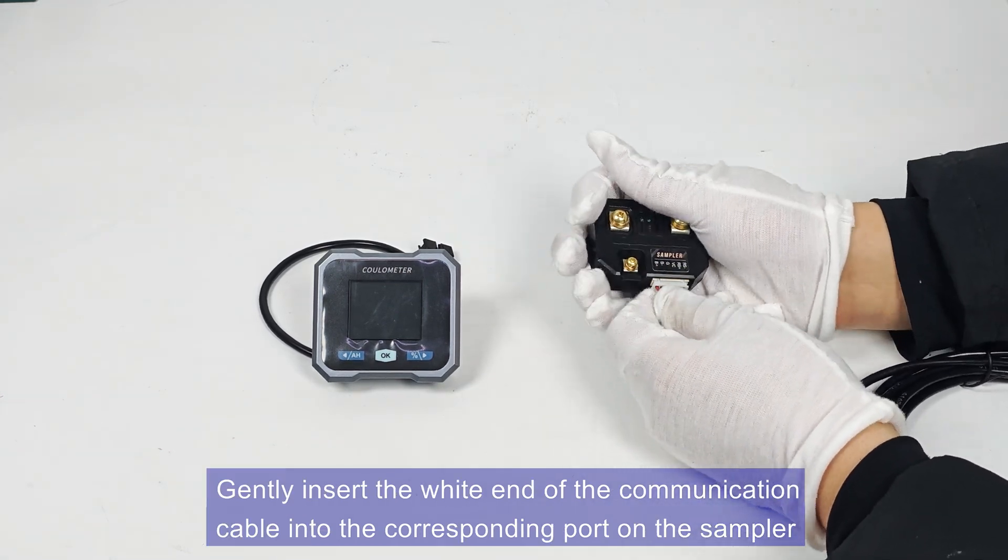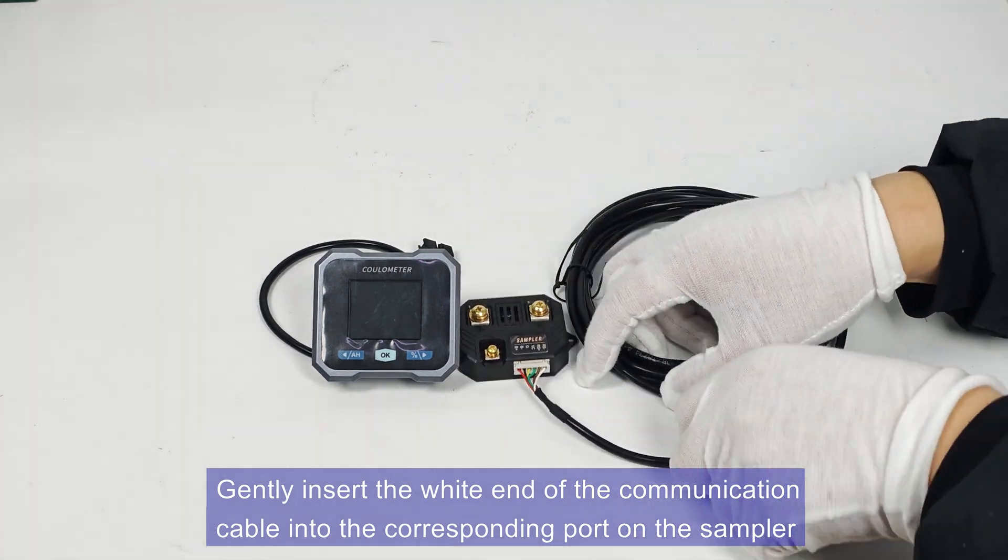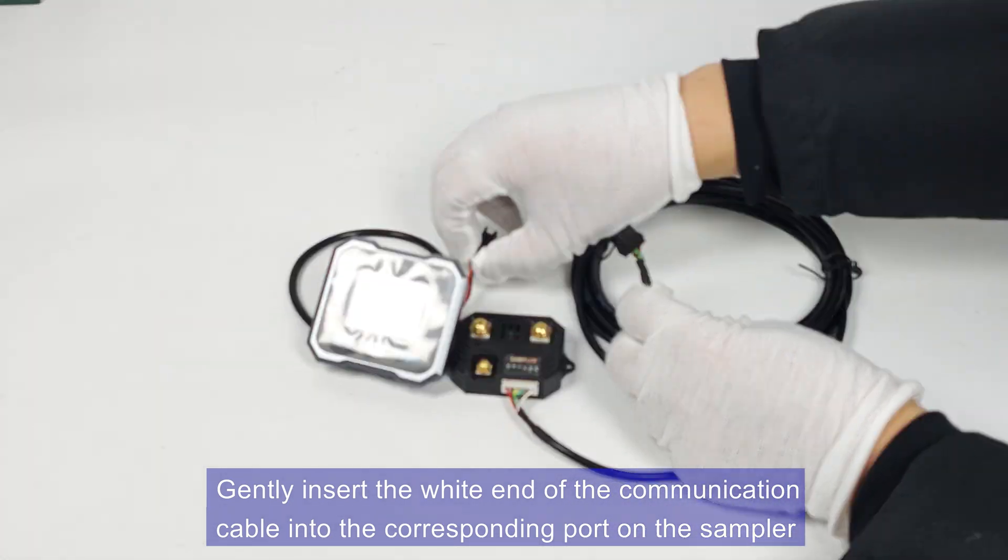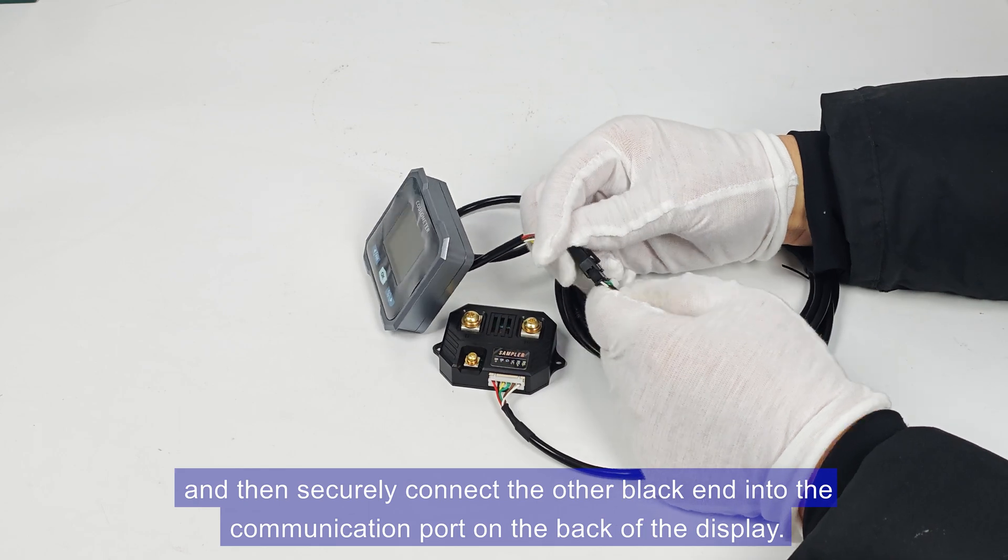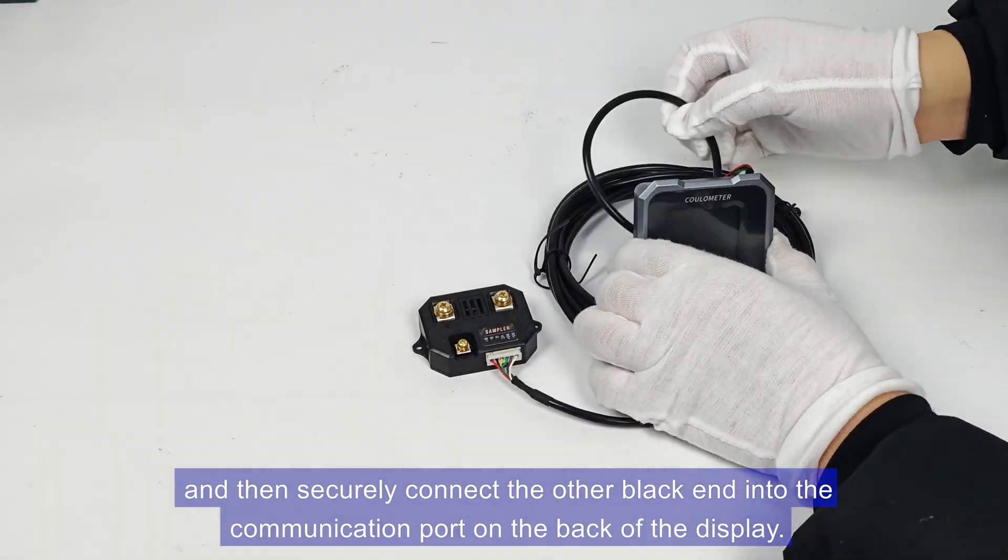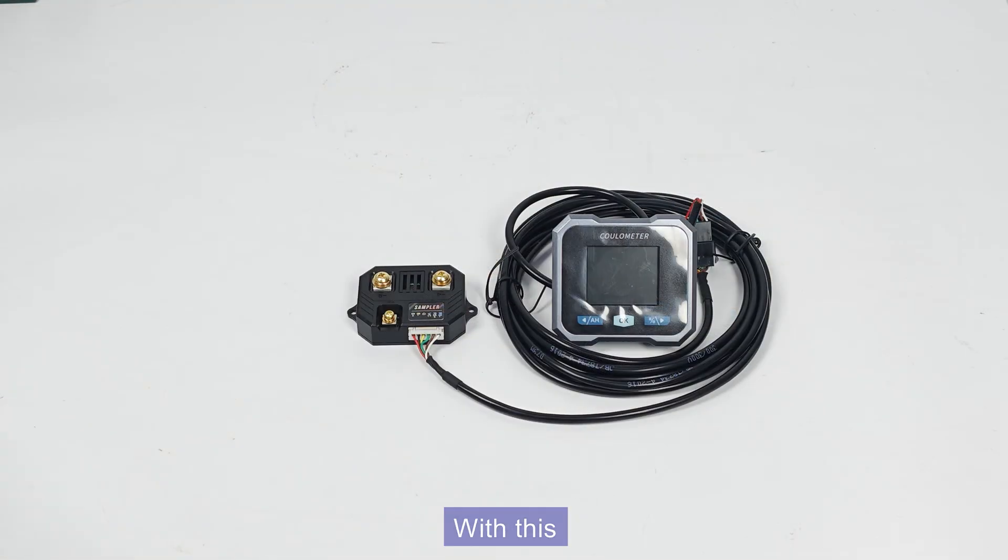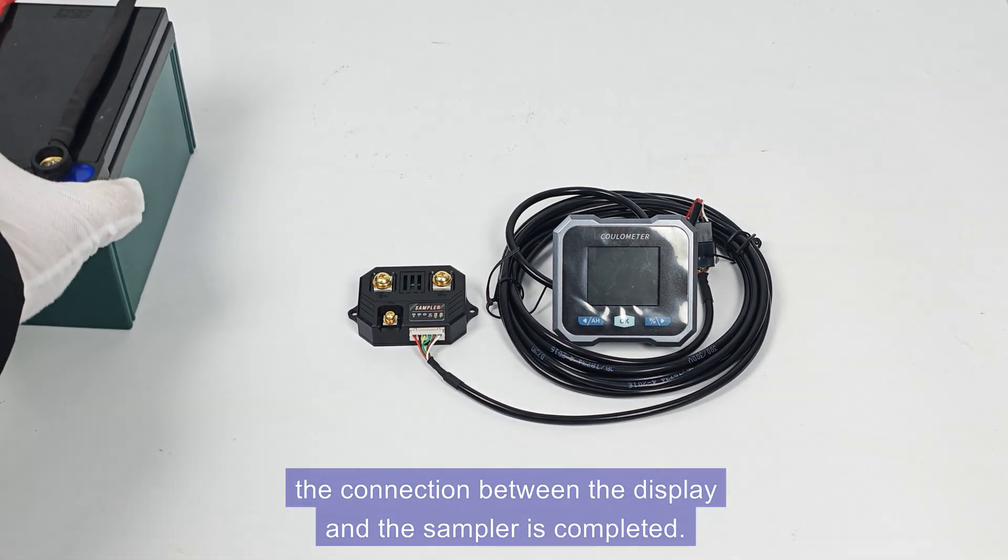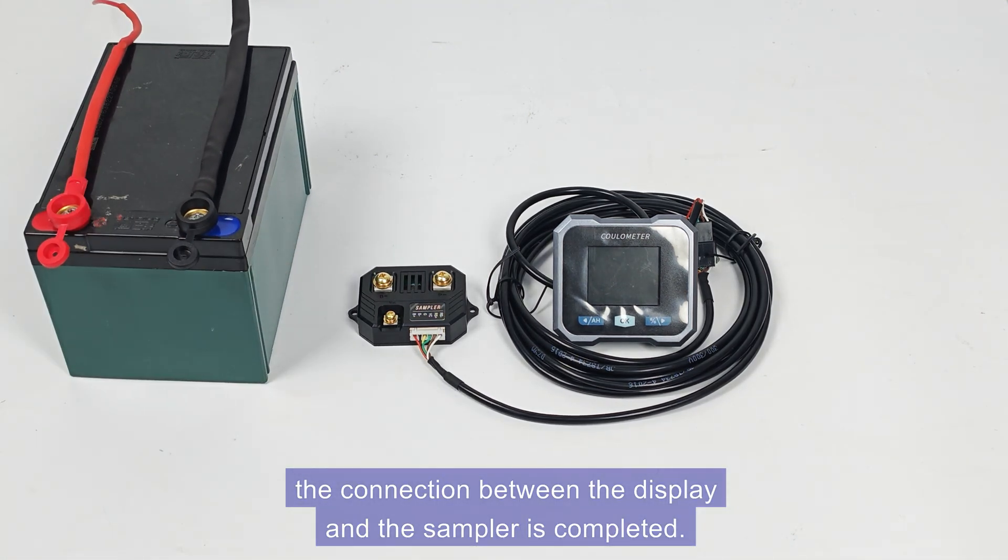Gently insert the white end of the communication cable into the corresponding port on the sampler, and then securely connect the other black end into the communication port on the back of the display. With this, the connection between the display and the sampler is completed.